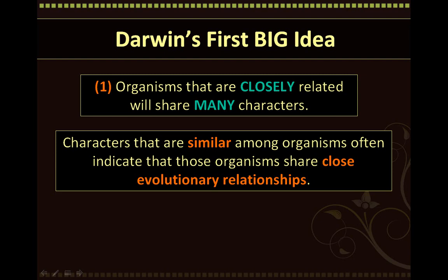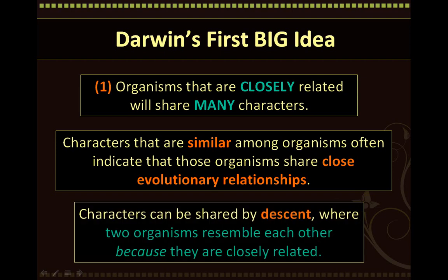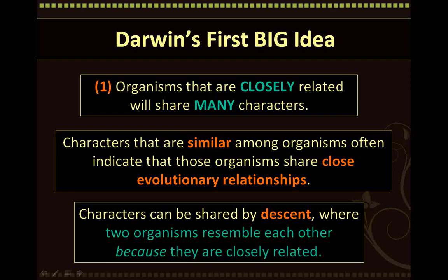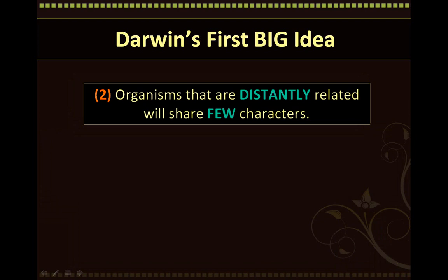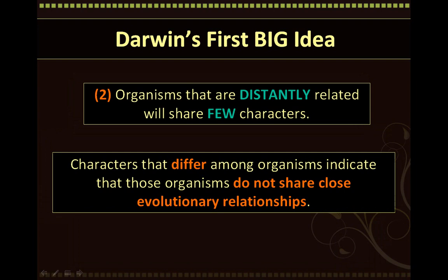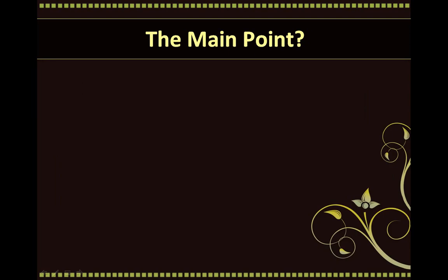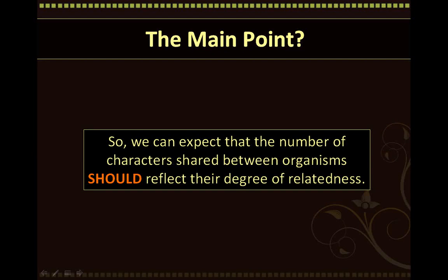This idea can be extended a bit further: characters can be shared between organisms by descent, where two organisms resemble each other because they are closely related. Another prediction from Darwin's first big idea is that organisms that are distantly related will share few characters. Characters that differ among organisms indicate that those organisms do not share close evolutionary relationships. These organisms do not have a recent common ancestor, and so there has been lots of time for them to accumulate changes that will make them dissimilar. It can be deduced that the number of characters shared between organisms should reflect their degree of relatedness — if organisms share many characters, it can be expected that they are related through a recent common ancestor.